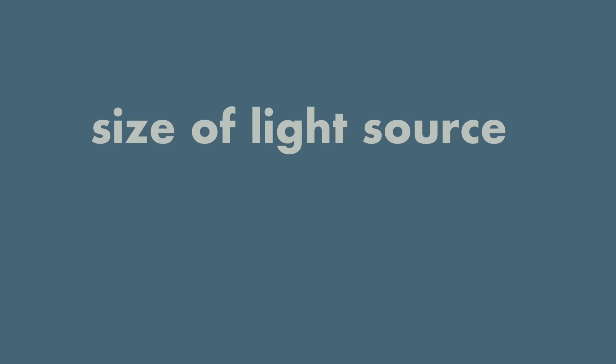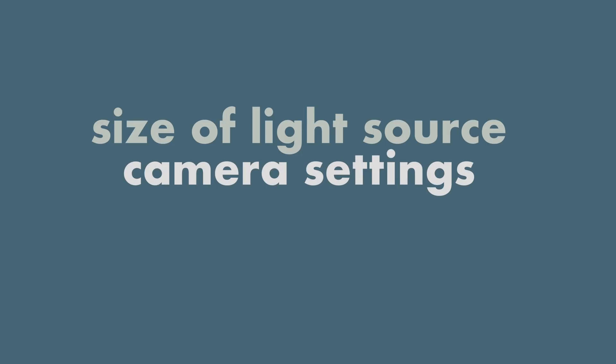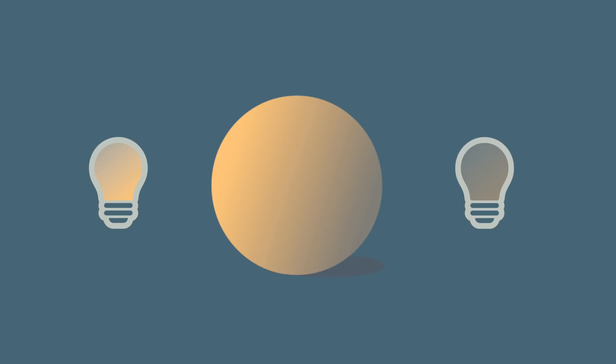In order for us to improve our lighting skills, we need to first understand how light works. In the real world, we have two main components affecting how the light will be rendered in a photograph. The first component is the size of the light source, and the second one is the camera settings. The intensity of the light comes into play only in relation to other light sources in our scene — for example, if we want one side of our object to be lit more than the other side.